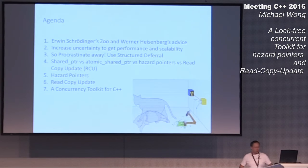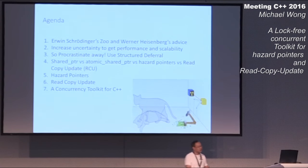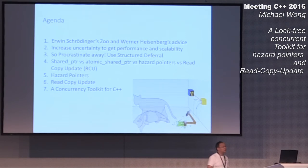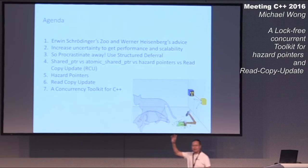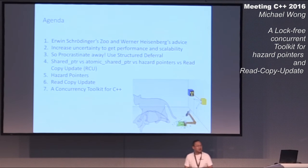I'm going to talk about Erwin Schrodinger's zoo and Werner Heisenberg's advice. I love to use these guys because I used to be a physicist, actually an astronomer. We're going to figure out how increasing uncertainty can actually get you performance and scalability. So the message here is: procrastinate away. It's actually good for you.